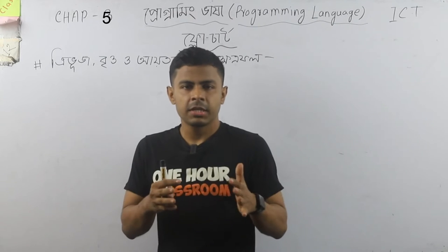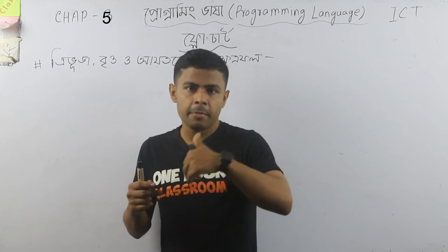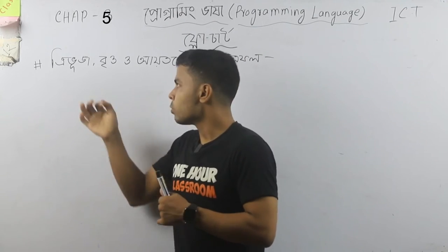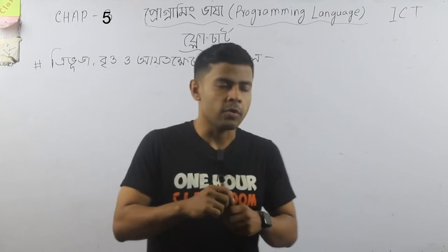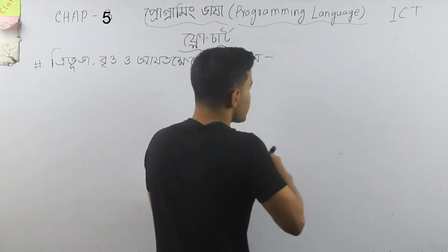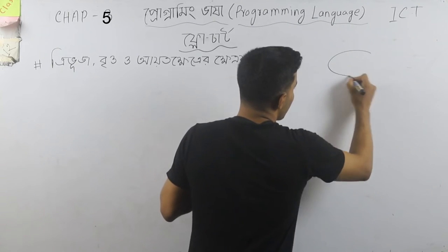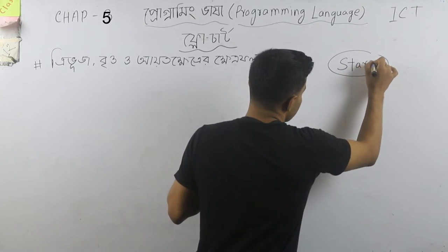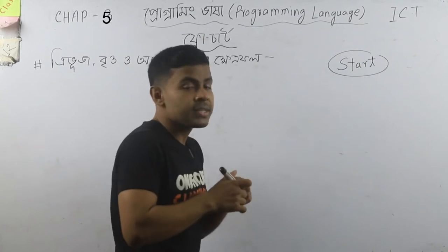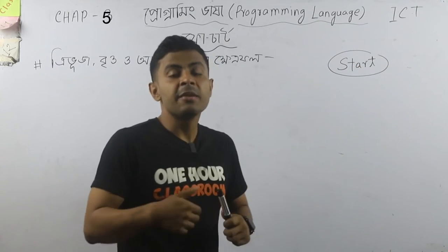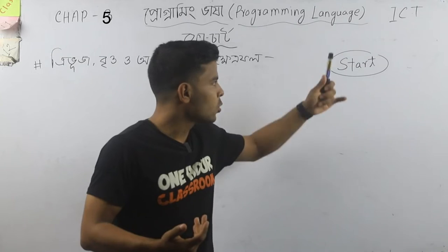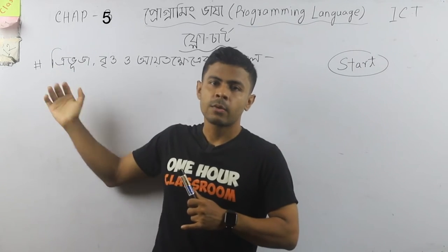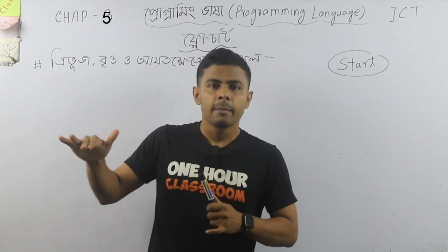So we can see a second program. In this program we can create a new program. Now we can start. If you start a circle program, it's called a circle. So we can start the program. The height means height.